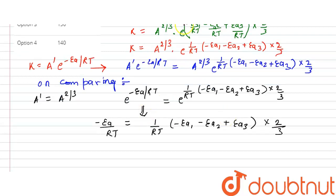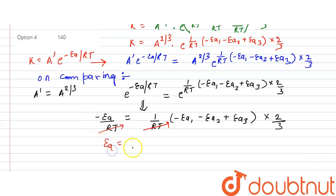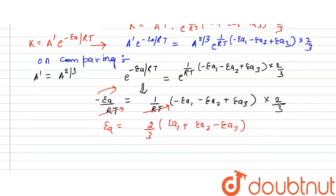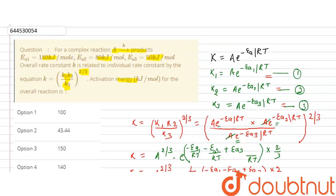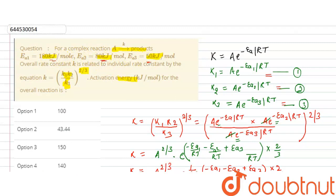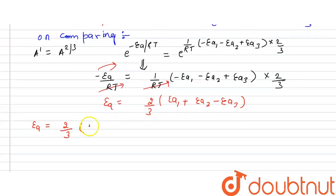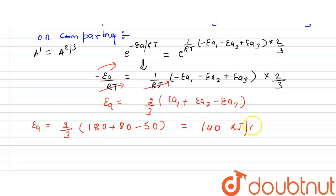From here, Ea = (2/3) · (Ea1 + Ea2 − Ea3). Now substituting the values: Ea1 = 180, Ea2 = 80, and Ea3 = 50. So Ea = (2/3) · (180 + 80 − 50) = (2/3) · 210 = 140 kJ/mol.